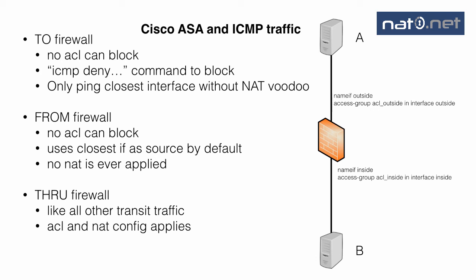By default the firewall does not handle ICMP traffic statefully. That means if you open for ping on the inside from B to A, you also need to open for echo replies in the other direction. It's a good idea to add the command 'fixup protocol ICMP' in the configuration, which will add 'inspect ICMP' in the policy map. I recommend that you always add fixup protocol ICMP.